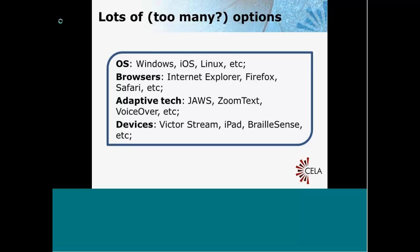The first thing I want to mention are all of the options that are out there when you're trying to download a book. Obviously, not everyone is using the same computer and the same setup. People will be using different operating systems like Windows or iOS. They'll use different browsers — Internet Explorer, Chrome, Safari.